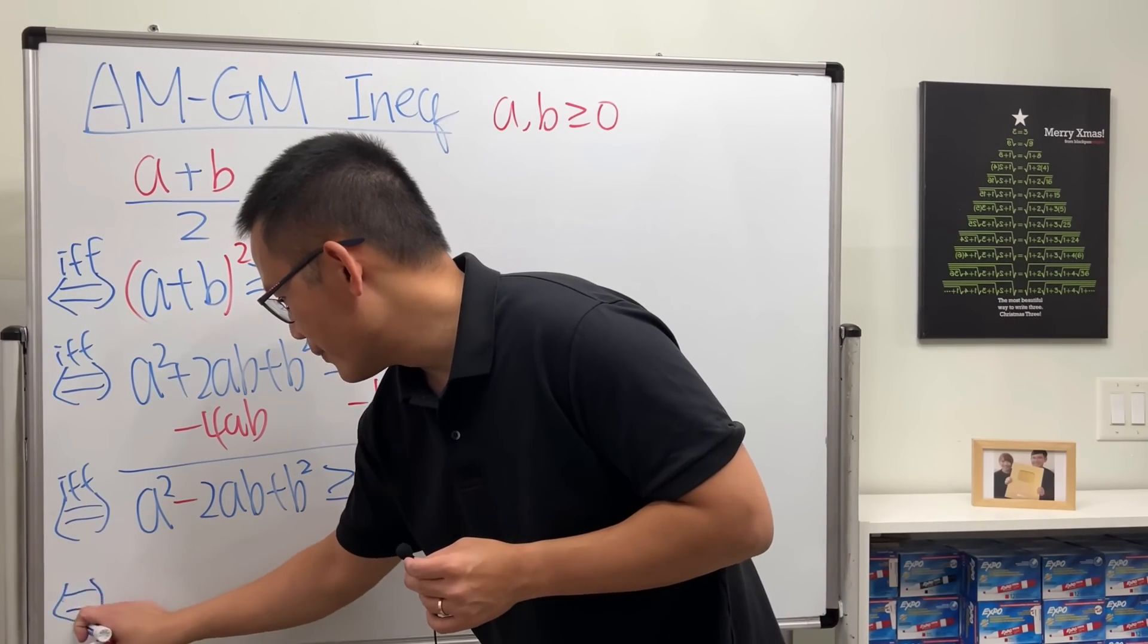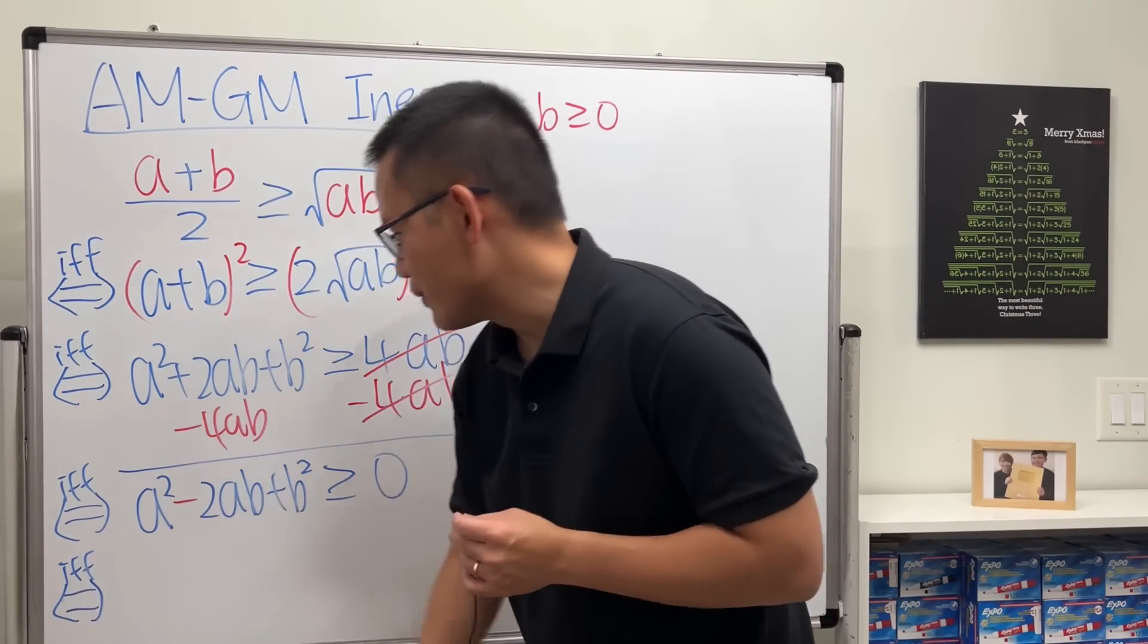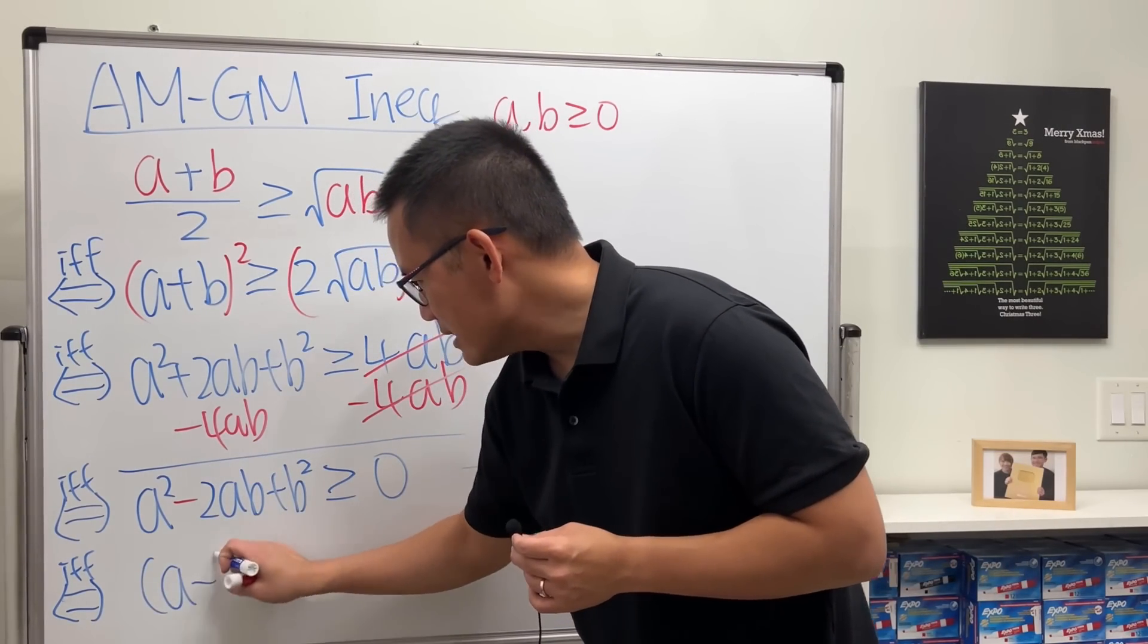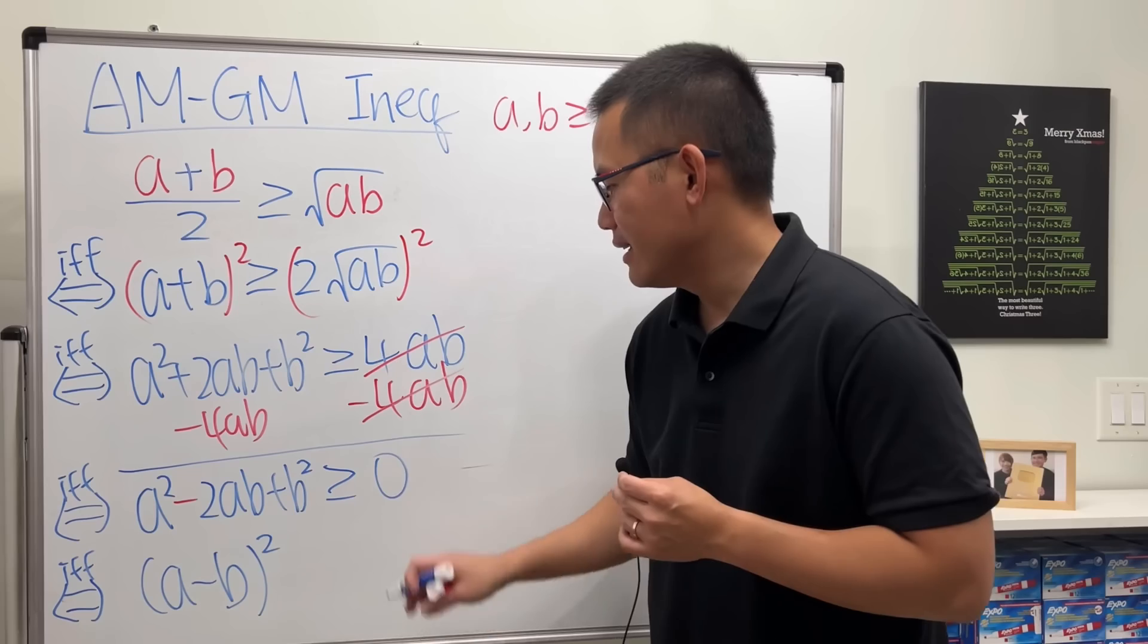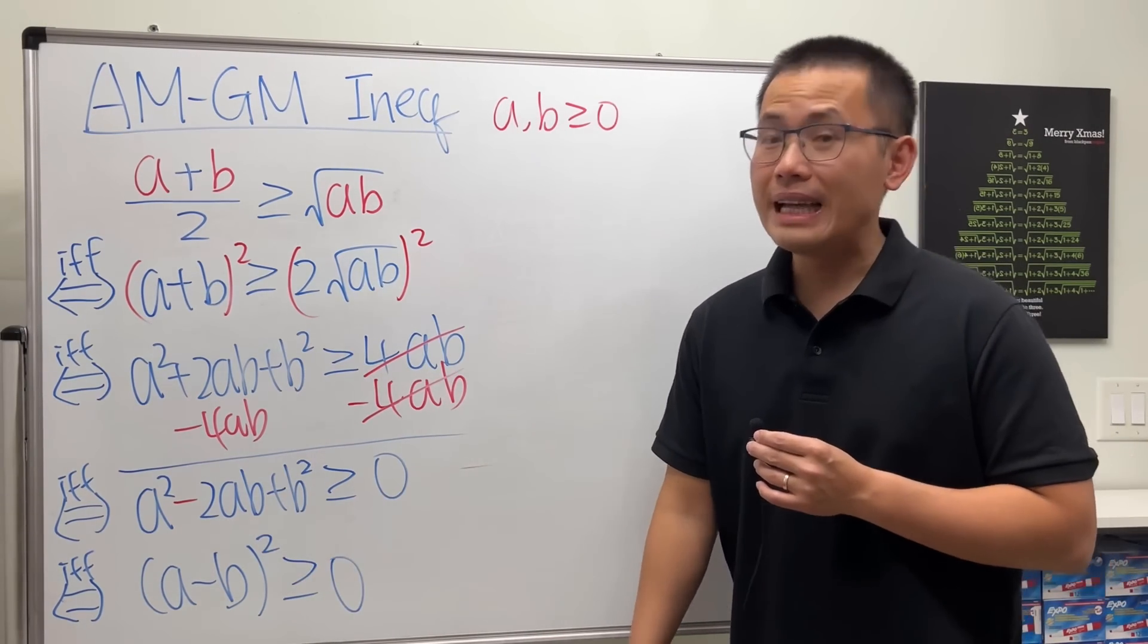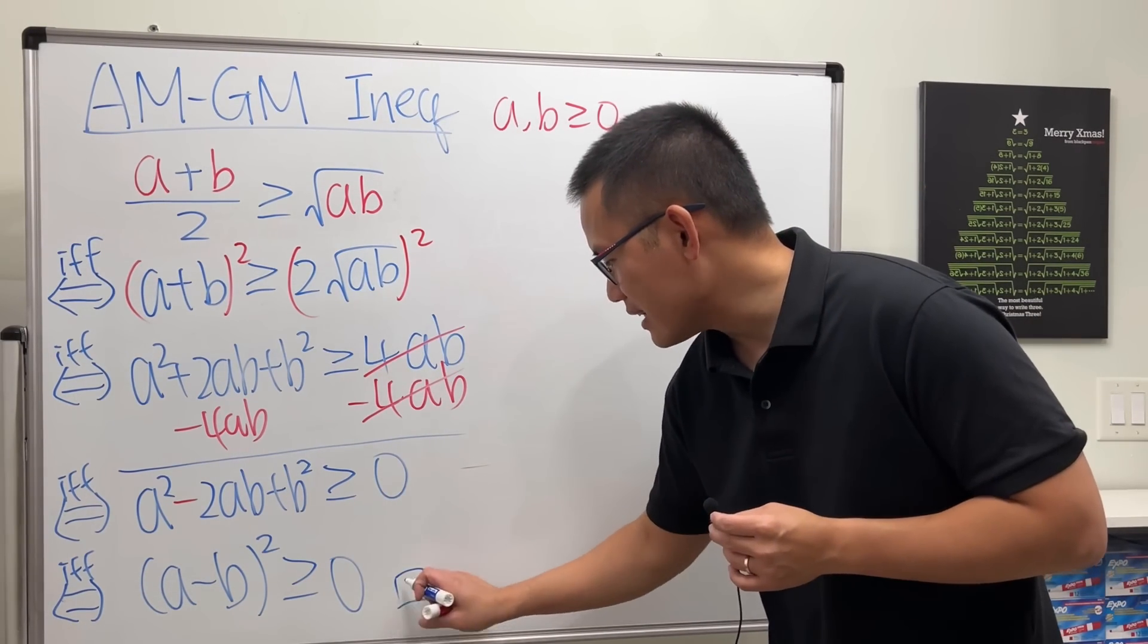So draw the arrow—or if you like, put on 'iff,' or maybe do both. Here we get (a minus b) squared, and that is still of course greater than or equal to zero.